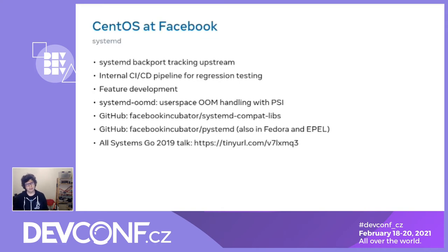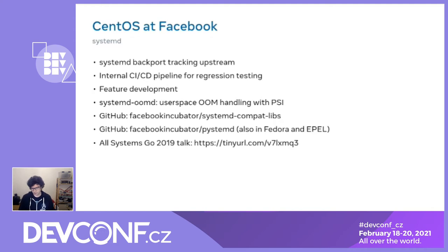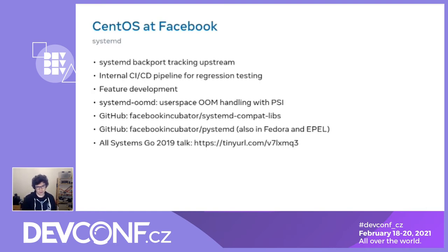We also have a few other projects tangential to systemd. Back when we started we brought compat libraries to make it possible to run a modern systemd on the distribution when it was still using an older version — that will likely sunset with version 9. We also have a project called pystemd that gives you a nice Python abstraction on top of systemd; because it uses Cython it links directly to libsystemd and is very fast, especially useful for operations over D-Bus. It's packaged in both Fedora and EPEL.